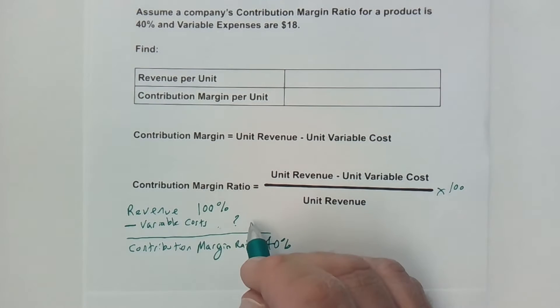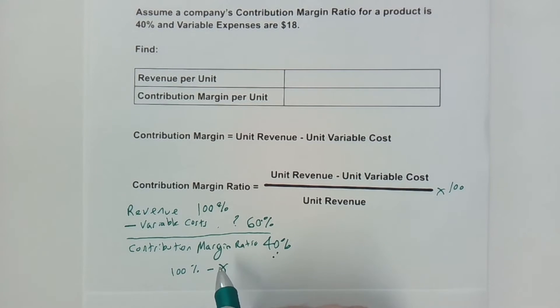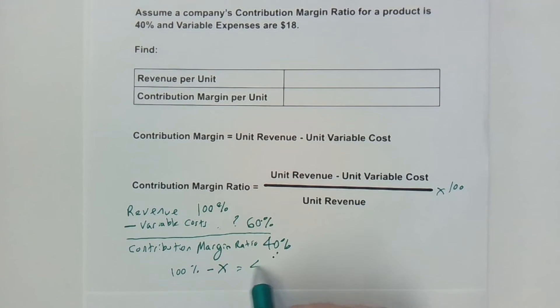Yes, you're right, 60%. 100% minus 60% is 40%. If you're not sure how to do that, we can just say 100% minus our unknown, which is X, is equal to 40%. We want to solve for X. I can add X to both sides.